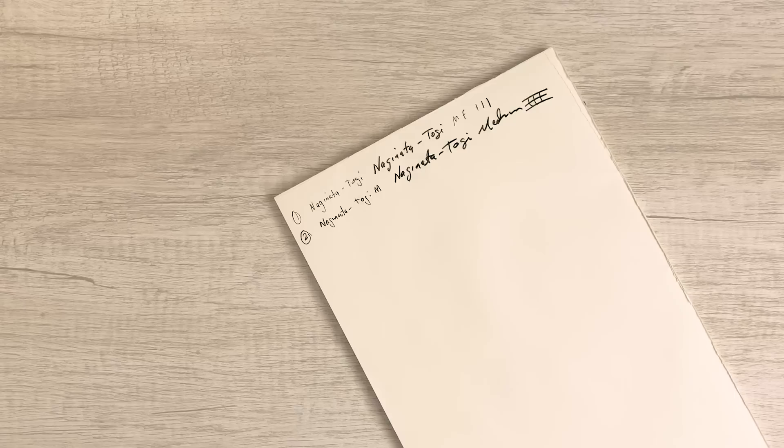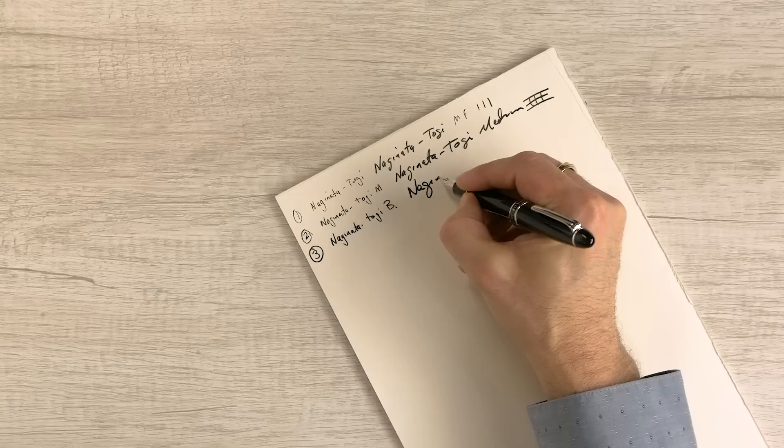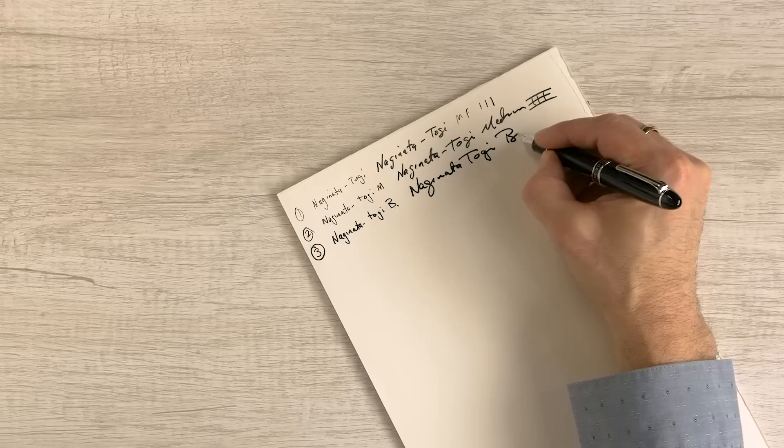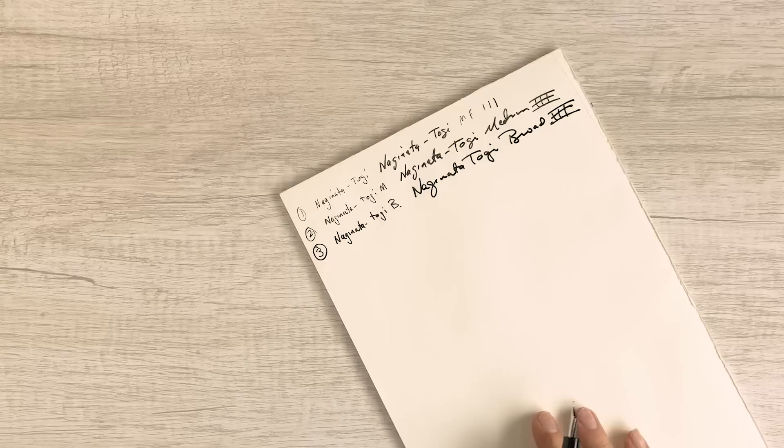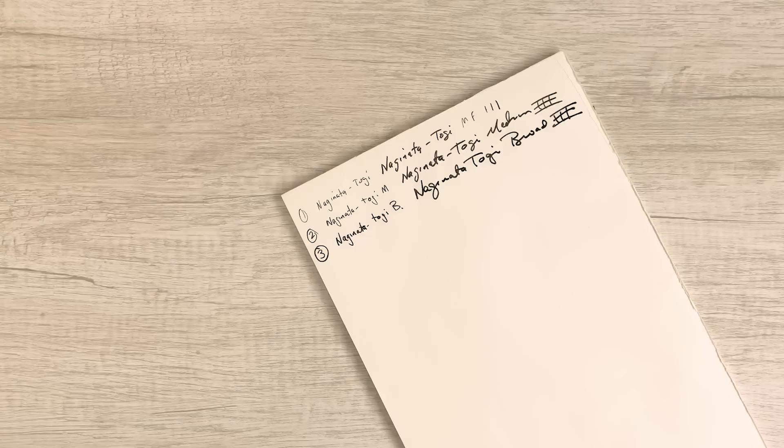And the final one of the Naginata Togi set, the broad. Now there are no Naginata Togi fines, just medium fine, medium and broad. So if you like a lot of ink on the page, this pen is going to be something that you're going to be able to see sheen, shading, and it's going to really put the ink on the page.